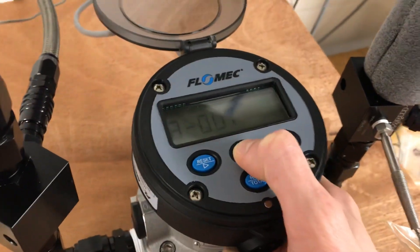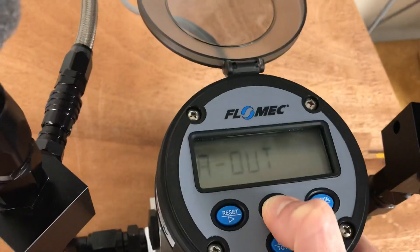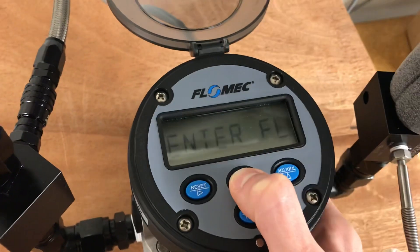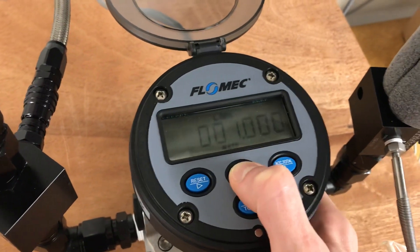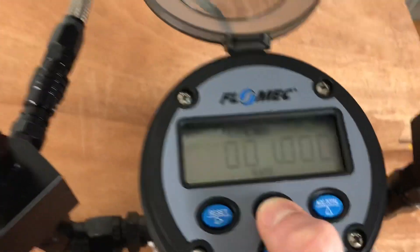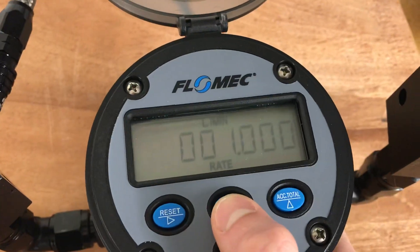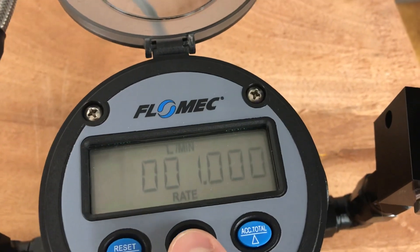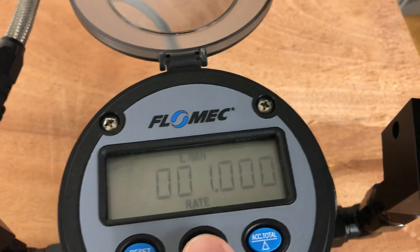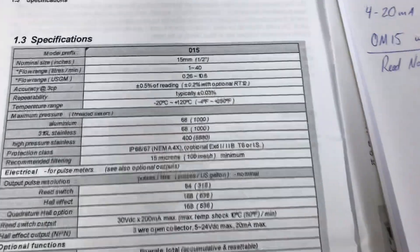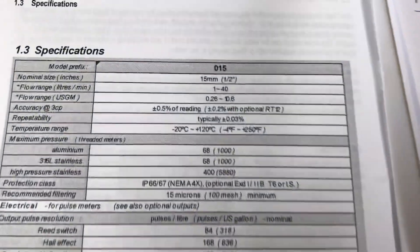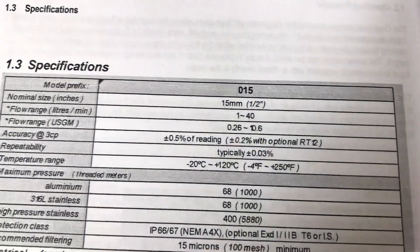We've got analog output — yes. We've got the flow, and since we're reading in liters per minute, I put one liter per minute. Now, why am I getting that? Since this page is open I don't want to stress the computer. See that flow range right there?